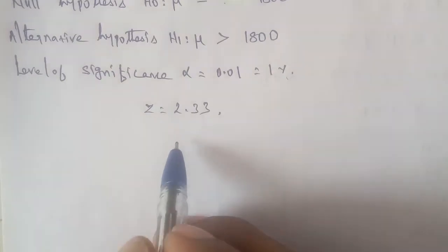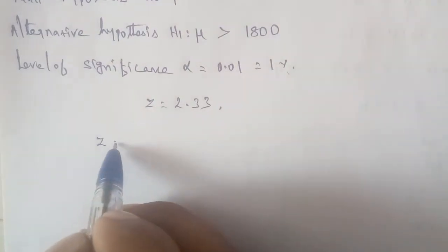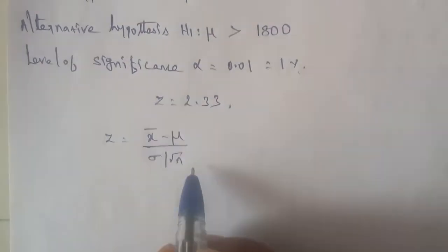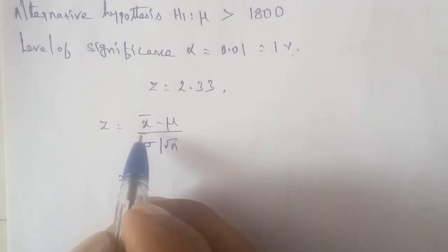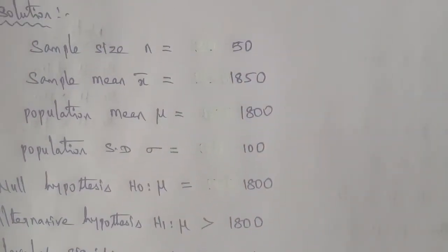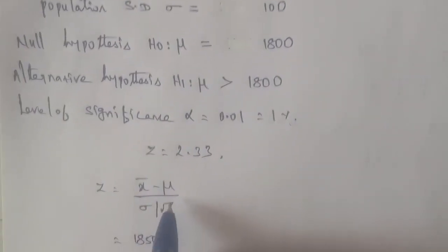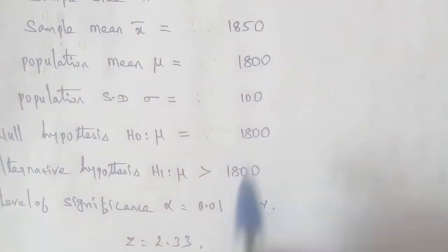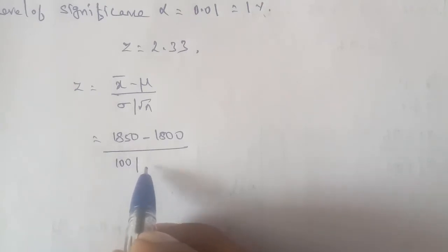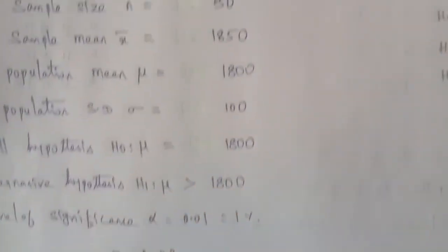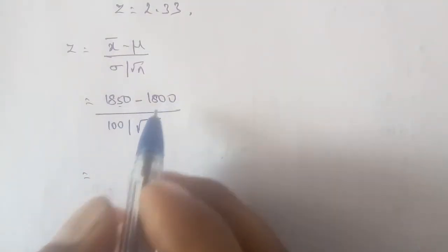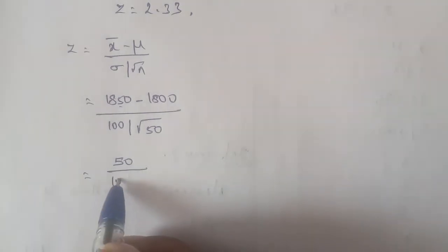As usual, the formula is z equals x-bar minus mu, divided by sigma over root n. Now, x-bar is 1850, mu is 1800, sigma is 100, and root n is root of 50, which equals approximately 7.07. So z = (1850 - 1800) / (100 / 7.07).